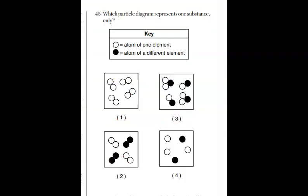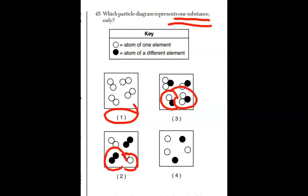For question 45, we have the good old particle diagrams, our circles here. And it says, which one represents one substance only? Remember, a substance is an element or a compound. Compound, of course, are different atoms of elements bonded together. The only answer it could be here would be choice 1. Choice 2, you have two different diatomic elements. Choice 3, you have two different compounds. And choice 4, you have two different elements. Again, choice 1.